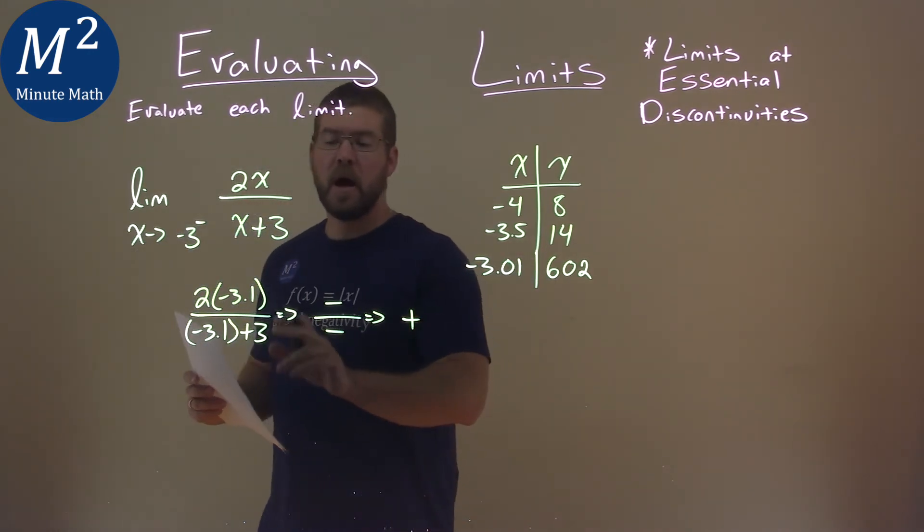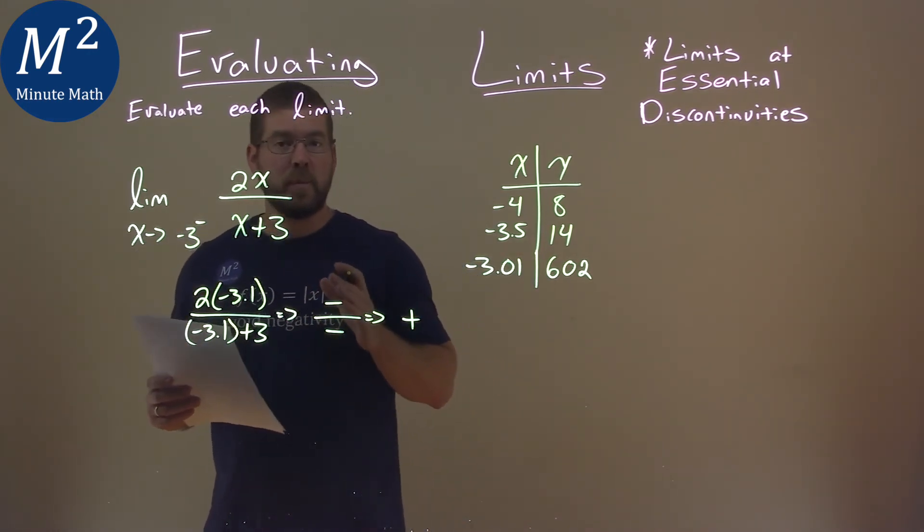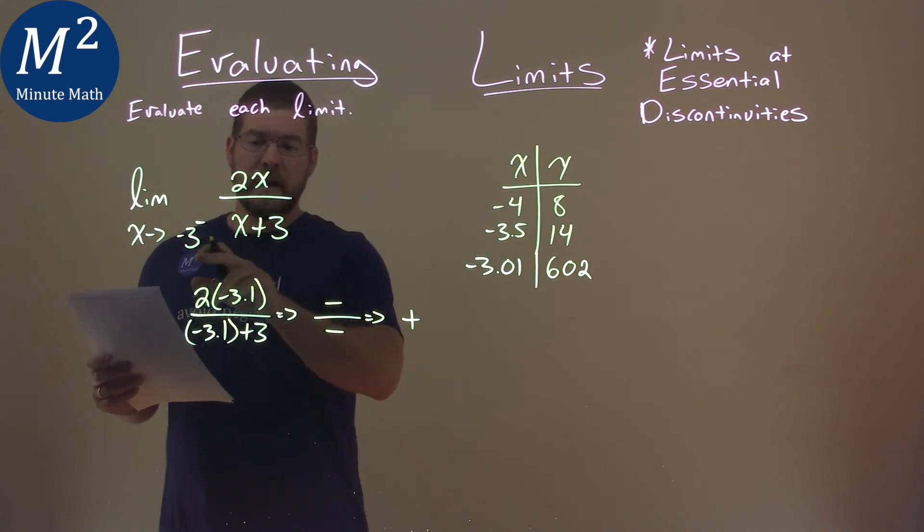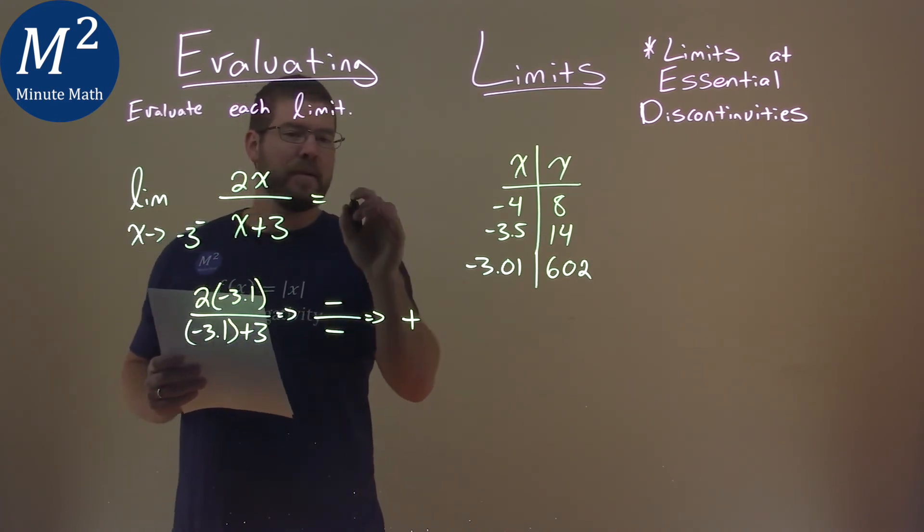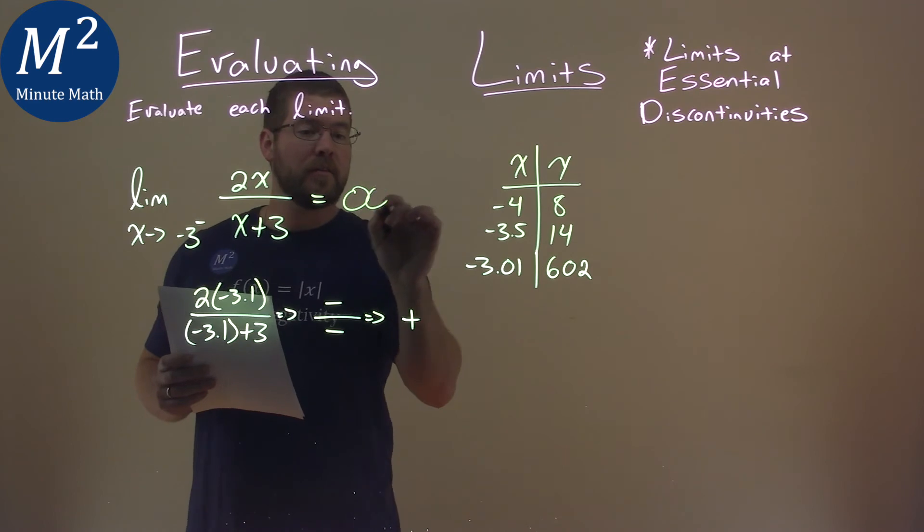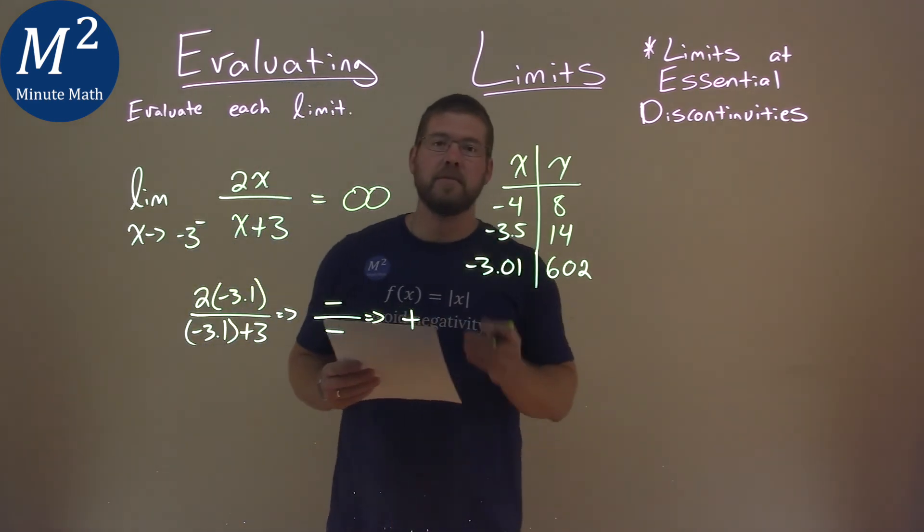So from our table and from our knowledge about limits here, as we approach negative 3 we're dividing by like a zero. We would say that this limit is equal to positive infinity. And that is our final answer.